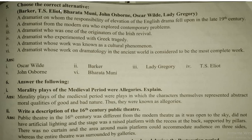Question 5: Choose the correct alternative. A dramatist on whom the responsibility of the elevation of English drama fell in the late 19th century — Oscar Wilde. A dramatist from the modern era who explored contemporary problems — Barker. A dramatist who was one of the originators of the Irish Revival — Lady Gregory. A dramatist who experimented with Greek tragedy — T.S. Eliot. A dramatist whose work was known as a cultural phenomenon — John Osborne. A dramatist whose work on dramatology in the ancient world is considered the most complete — Bharat Muni.